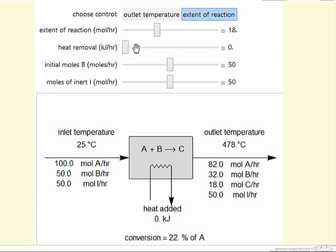Now we can remove heat by moving this slider. It's going to lower that outlet temperature, and depending on what we're controlling, we'll have the same extent of reaction. However, if we select the outlet temperature and then remove heat, we'll increase the extent of reaction.